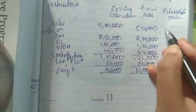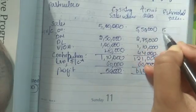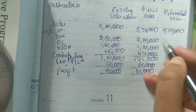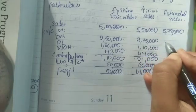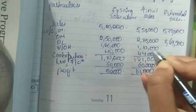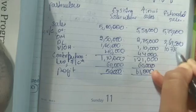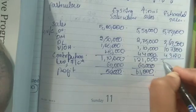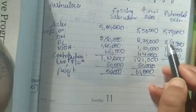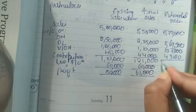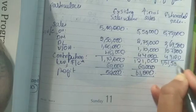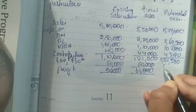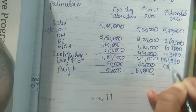Five lakh fifty thousand plus 4 percent gives five lakh seventy two thousand. The variable costs are reduced by 2 percent: two lakh seventy five thousand minus 2 percent is two lakh sixty nine thousand five hundred; one lakh ten thousand minus 2 percent is one lakh seven thousand eight hundred; forty four thousand minus 2 percent is forty three thousand one twenty. Fixed cost of sixty thousand minus 2 percent is fifty eight thousand eight hundred.